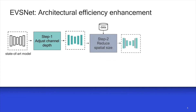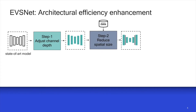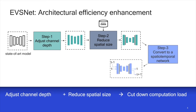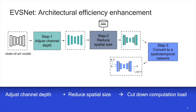Step 2 reduces computational load by inserting a pair of downsample and upsample layers to the network. We aim to put the downsample layer earlier and the upsample layer later in the computing path to maximize computational reduction while minimizing the negative impact on accuracy.